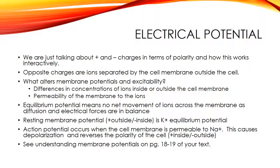Ion channels are integral transmembrane proteins that span the width of the cell, and they are either open or closed depending on the charge. Electrochemical potentials exist across the membrane of many cells because there are higher concentrations of specific ions on either side of the cell membrane. Sodium, calcium, and chloride ions are higher outside the cell, and potassium ions are higher inside the cell. When most cells are at rest, there is more negative charge inside the cell than outside, and the cell is said to be polarized, established by the difference in electrical charge and chemical gradients.